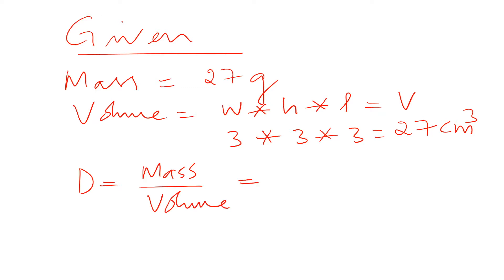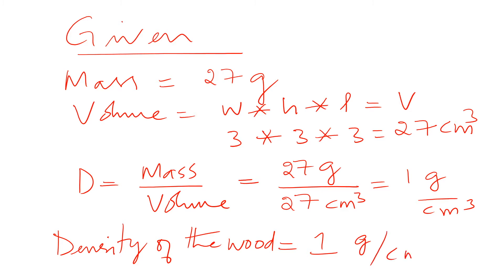So we can write it as 27 grams divided by 27 cm³, which is the volume, which equals 1 gram per cm³. The density of the wood equals 1 gram per cm³, and that's our answer.